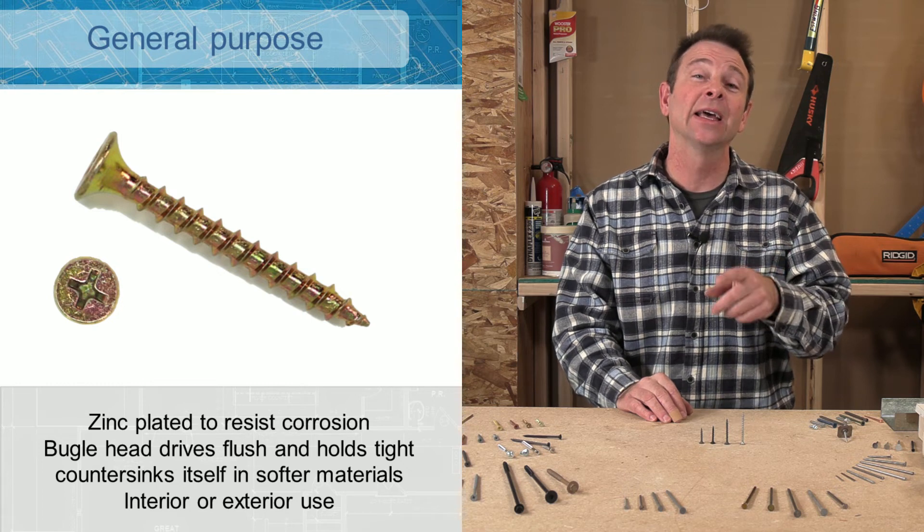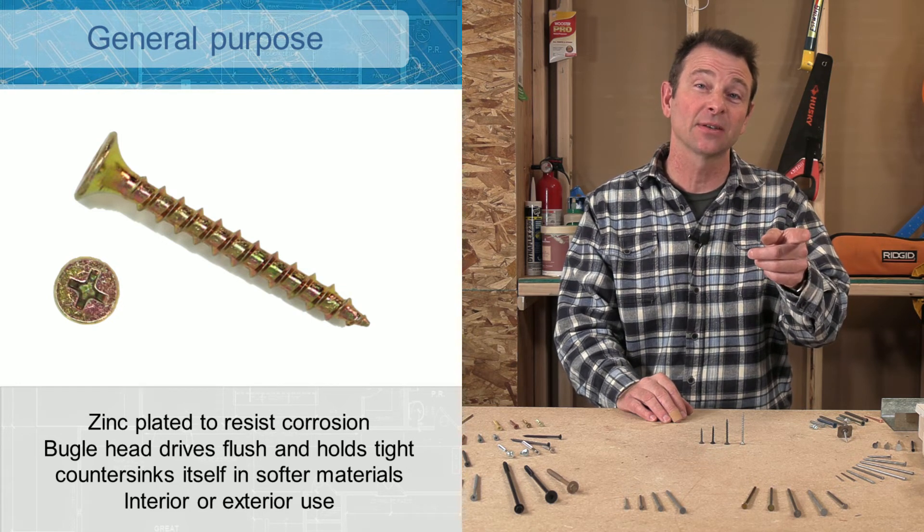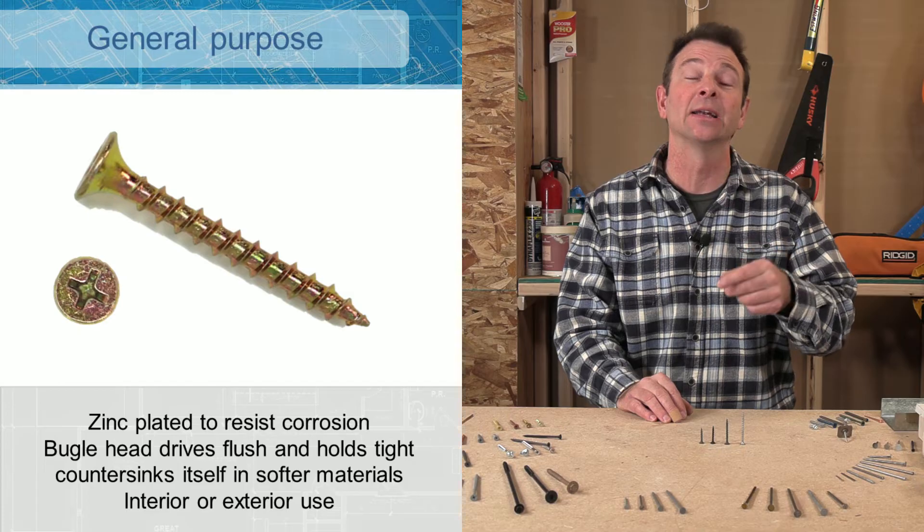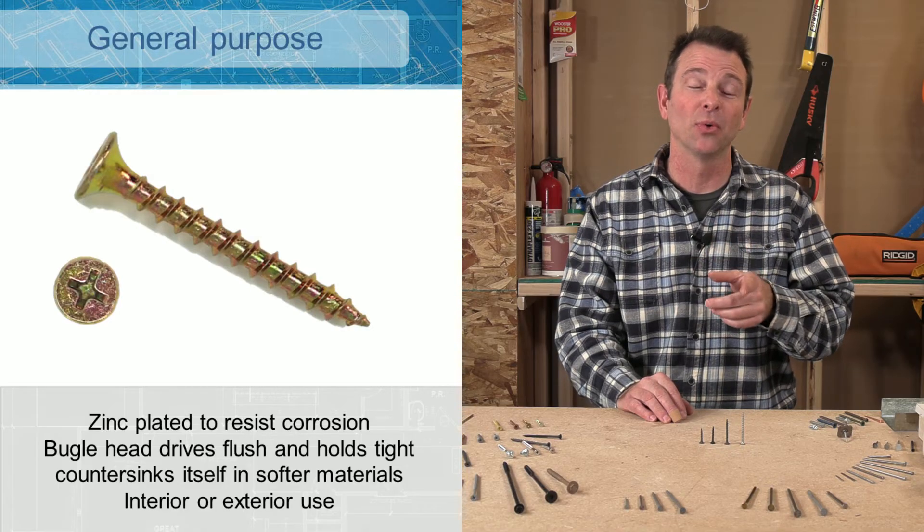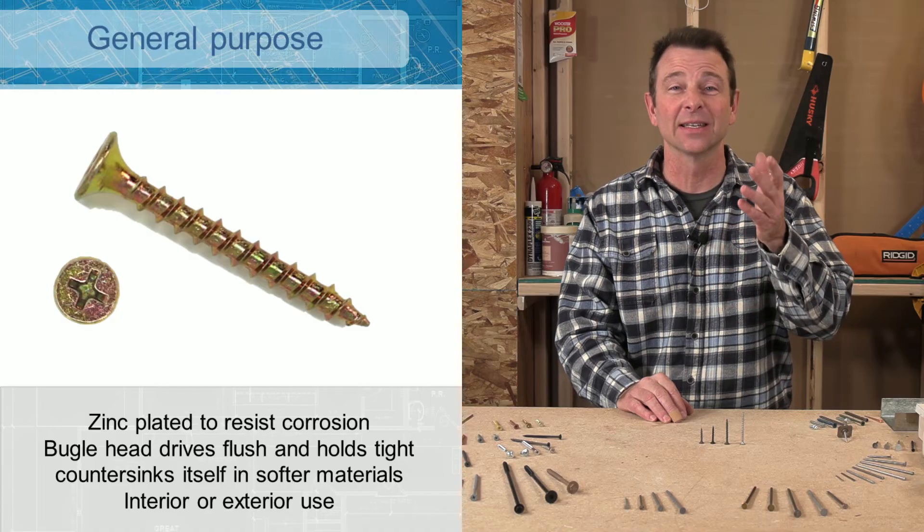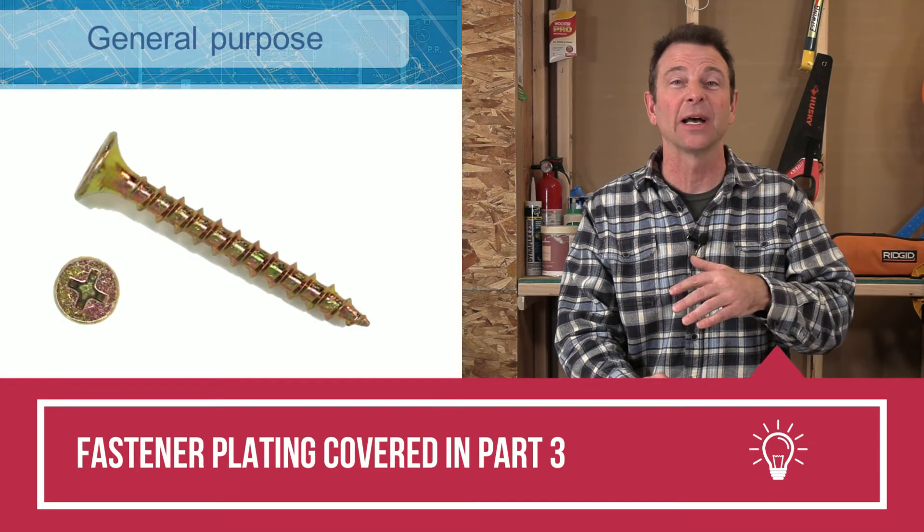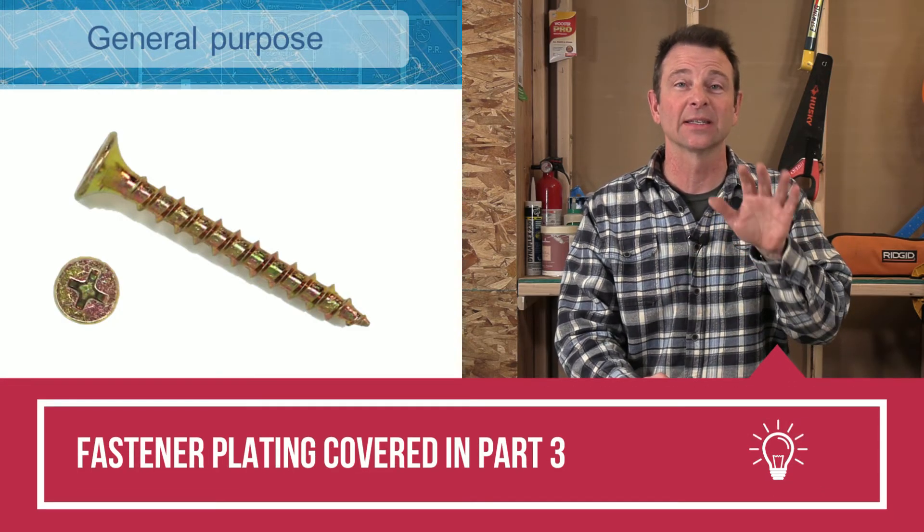Also in this general purpose screw, it not only has a bugle head, this one also has a Phillips drive stamped into the head. It has coarse threads on it, and it also has a standard point. One thing to mention too is the plating on this screw, which we'll talk about later. This has a weather resistant plating on it.